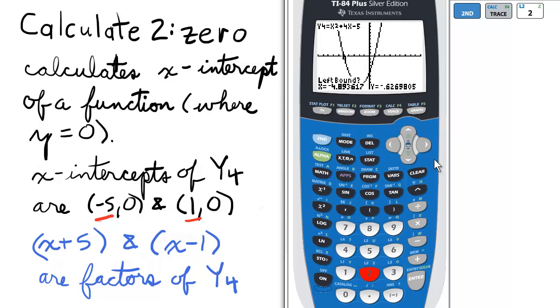Now I'm going to guess it's between 0 and 2. So my left bound I'll enter 0 and enter. My right bound I'll enter 2 and press enter.